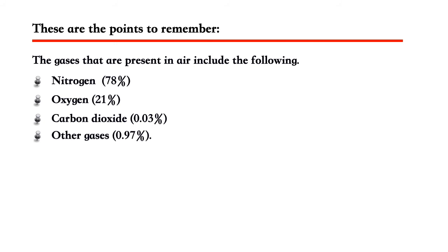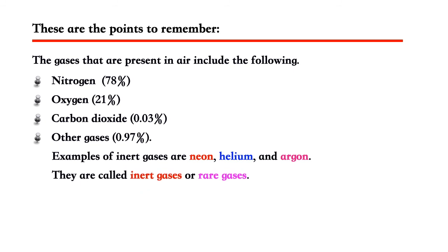Carbon Dioxide, 0.03%. Other gases, 0.97%. Examples of inert gases are Neon, Helium, and Argon. They are called inert gases or rare gases. Oxygen is the gas that supports burning.